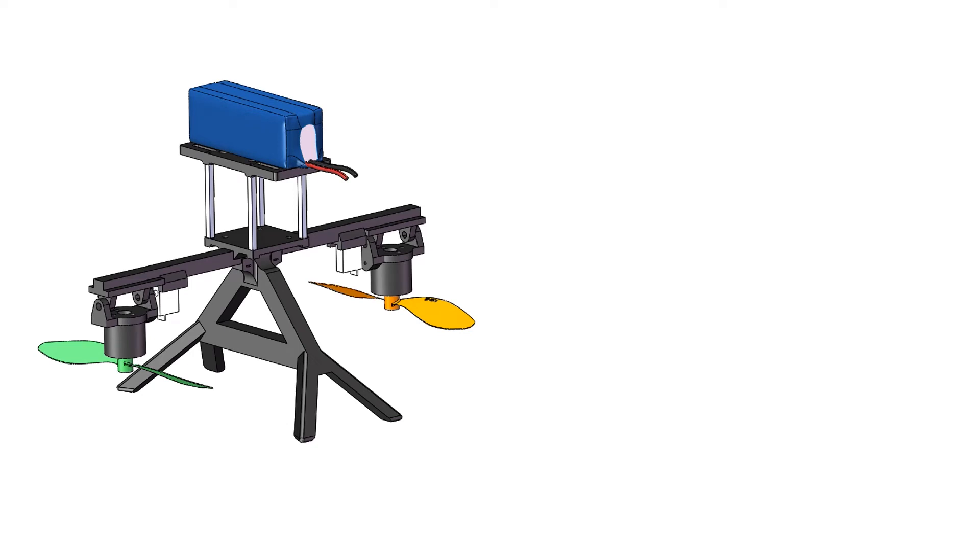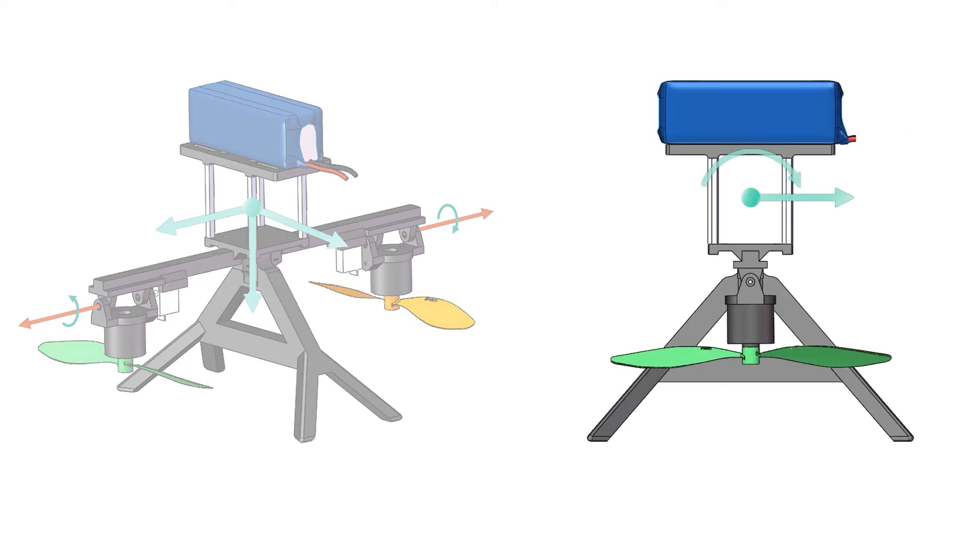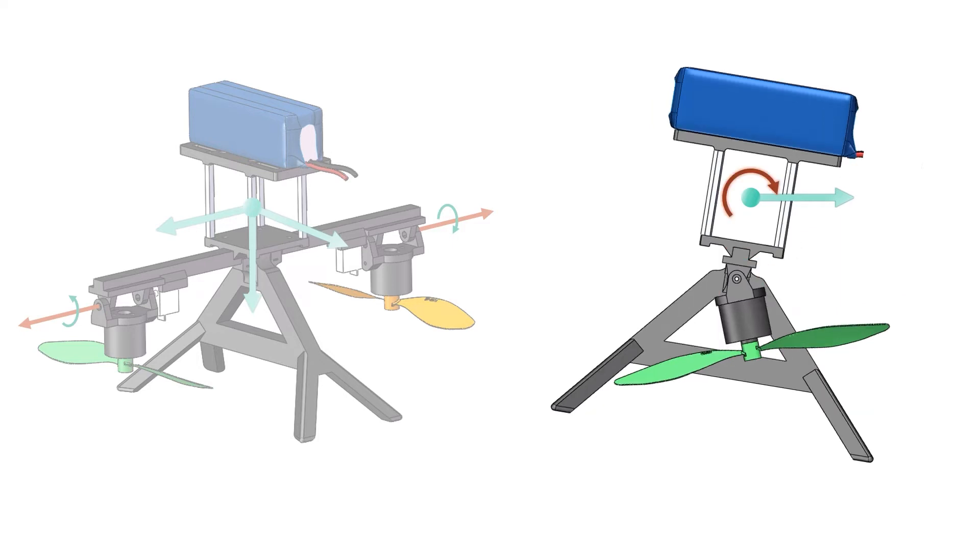We present a new bicopter with propellers in pusher configuration and with the center of mass placed above the servo rotation axis. To tilt it forward, the servo tilts counterclockwise. The reaction torque is clockwise, aligned with the desired rotation, helping the platform tilt forward.